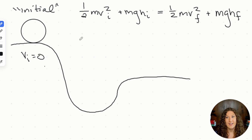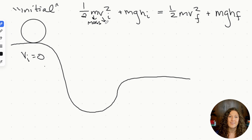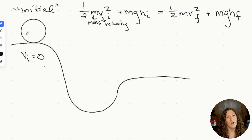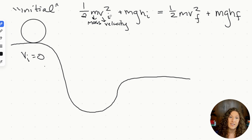When initial velocity is zero, our first term — one half mv squared — equals zero. This is our initial kinetic energy. So our assumption of the object being at rest means that the entire initial kinetic energy variable is equal to zero.